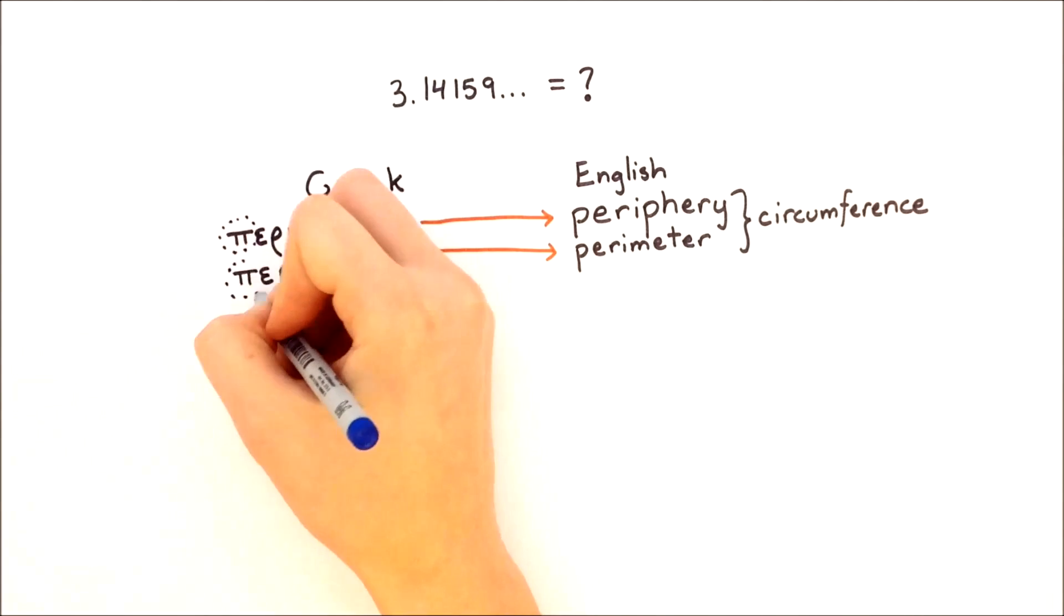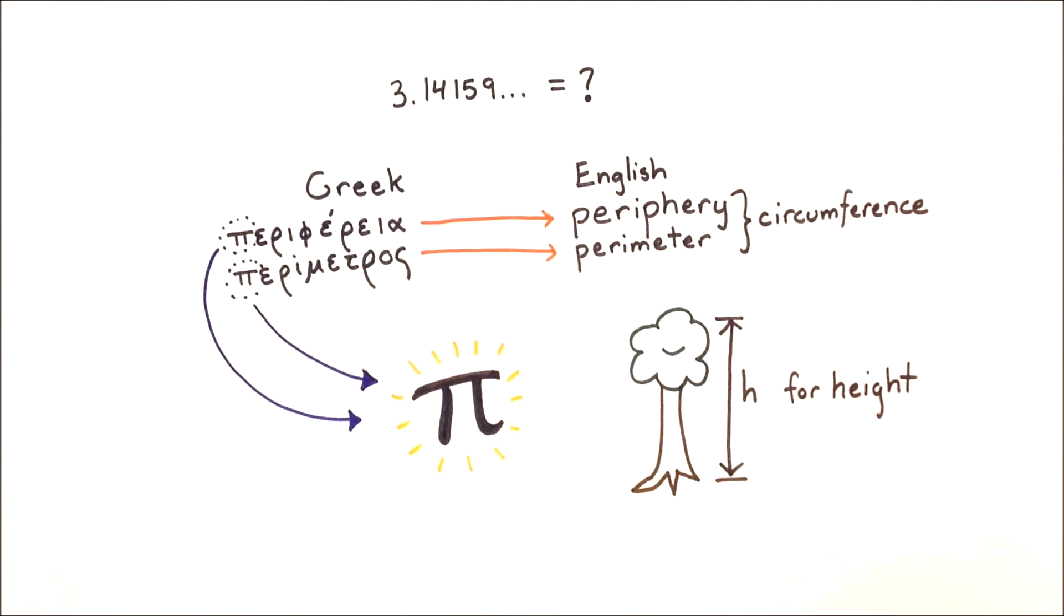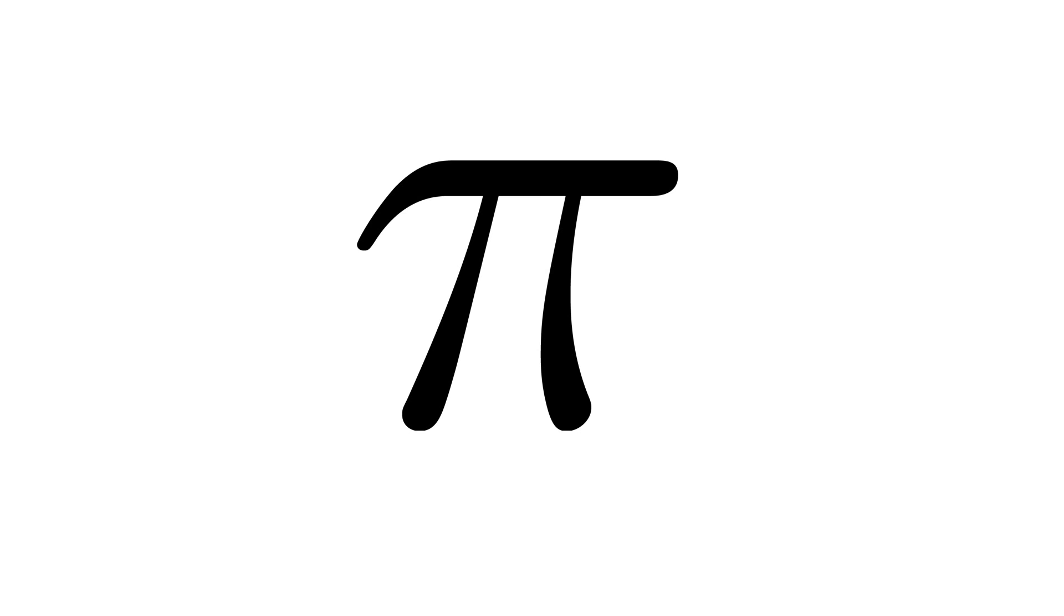And just as we would use h to label the height of a tree today, he used the letter pi from parametros for the number 3.14159. And that is why the symbol pi is used today.